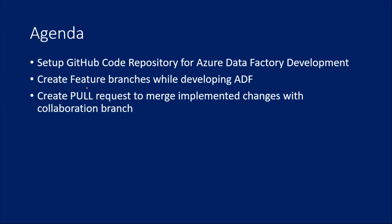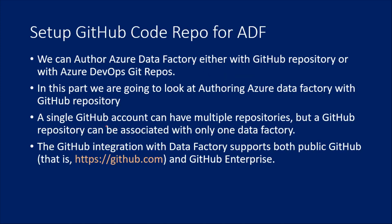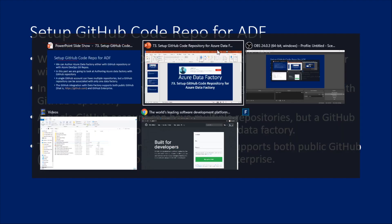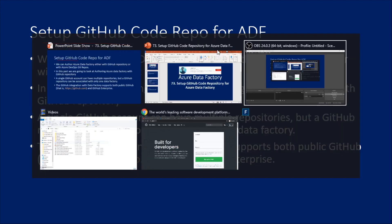We will also look at how to create a pull request to merge your implemented changes with the collaboration branch. If you are not clear about what a feature branch or collaboration branch is, I will explain everything in this video. I strongly recommend watching my previous video first.